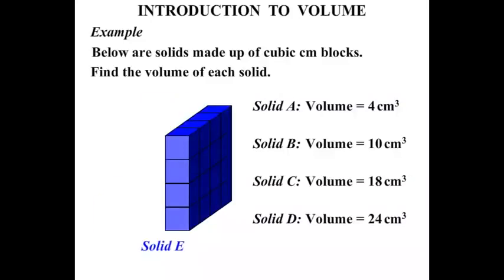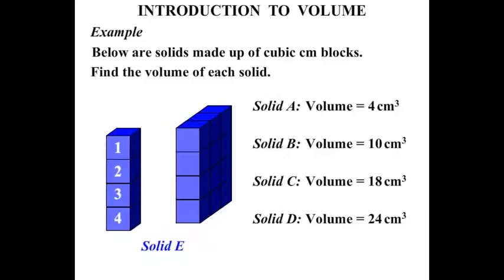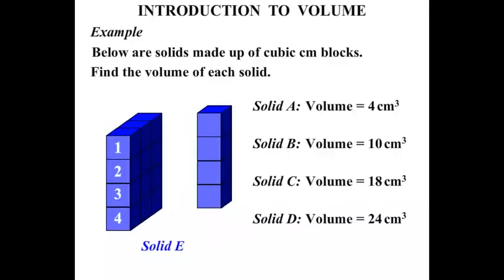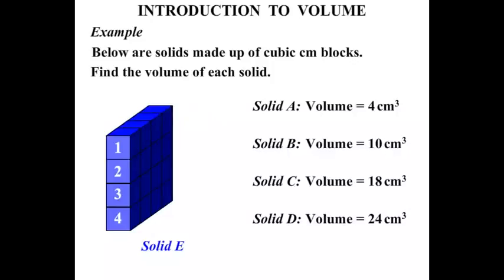Alright, Solid E. Okay, a skinnier one this time. 1, 2, 3, 4. Okay, the front layer there has 4. Let's move it across. There's another layer there. There's another layer, and another, and another. So what have we got? We had 4 layers. So we have 4 lots of 4, and 4 fours are 16. So Solid E has a volume equal to 16 cm³.